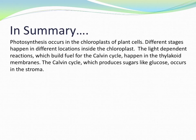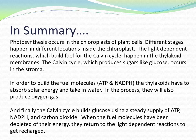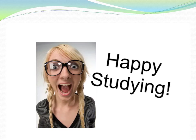In summary, photosynthesis occurs in the chloroplast of plant cells. Different stages happen in different locations inside the chloroplast. The light-dependent reactions, which build fuel for the Calvin Cycle, happen in the thylakoid membranes. The Calvin Cycle, which produces sugar like glucose, occurs in the stroma. In order to build the fuel molecules like ATP and NADPH, the thylakoids have to absorb solar energy and take in water. In the process, they will also produce oxygen gas. Finally, the Calvin Cycle builds glucose using a steady supply of ATP and NADPH and carbon dioxide. When the fuel molecules have been depleted of their energy, they return to the light-dependent reactions to get recharged. That's all for now. I hope this helps, and as always, happy studying!